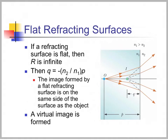Now, what if the radius goes to infinity? What if it's a flat refracting surface? If we solve our equation we get Q equals minus N2 over N1 times P. So the image formed by a flat refracting surface is on the same side as the object, and it's a virtual image. The light rays appear to come from a point which we call a virtual image.